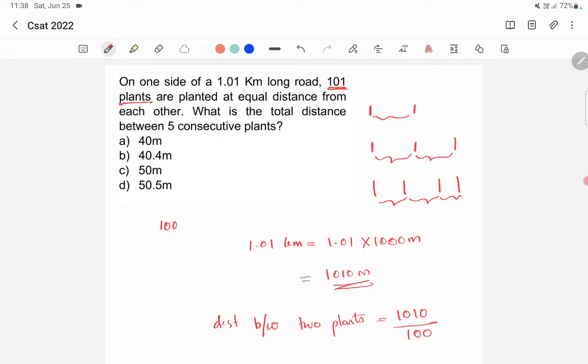If we have 101 plants, there will be only 100 distances between them. So it will be 10.1 meters. The distance between two consecutive plants is 10.1 meters. Now the question asks what is the total distance between five consecutive plants.